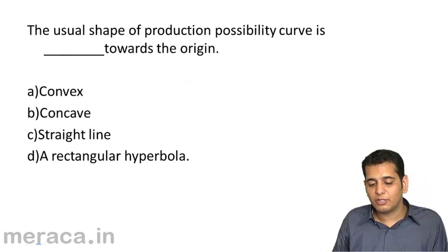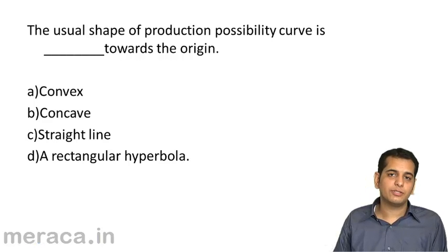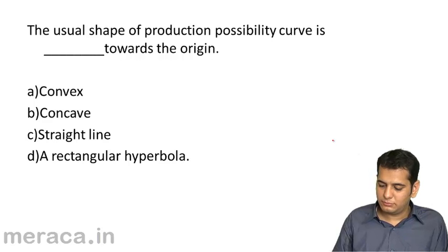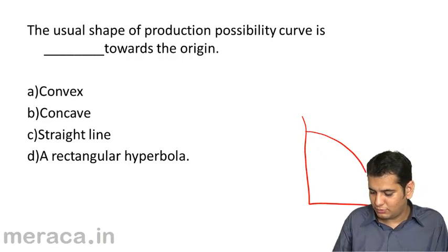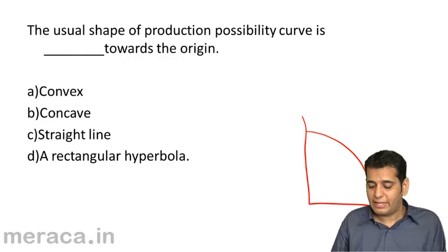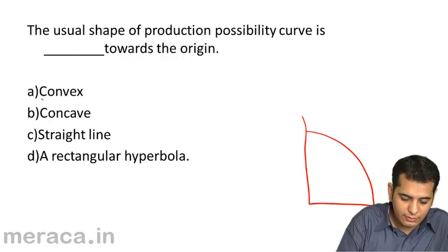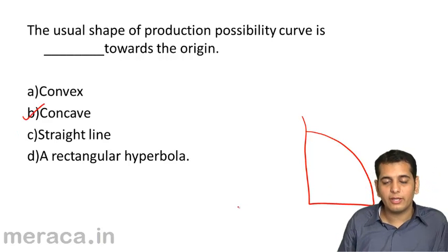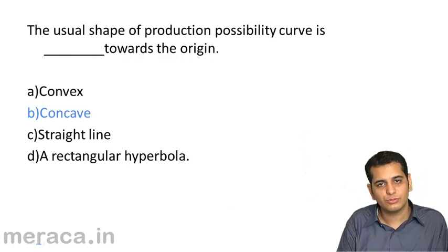The usual shape of the production possibility curve is dash towards the origin. This is how a production possibility curve generally looks — it is concave to the origin.